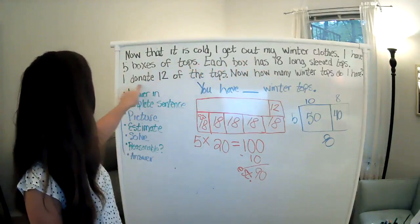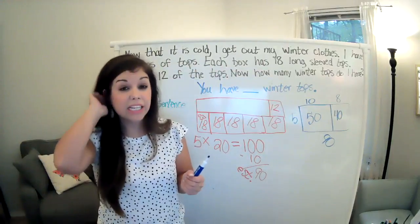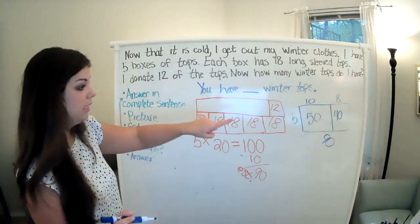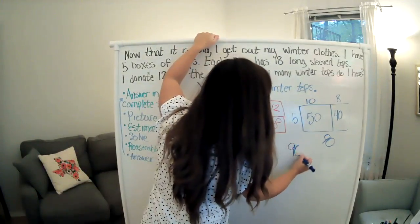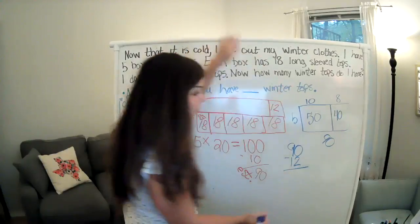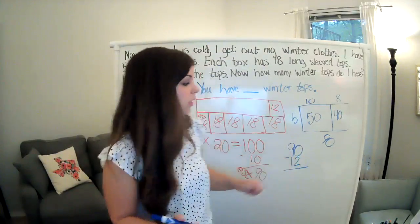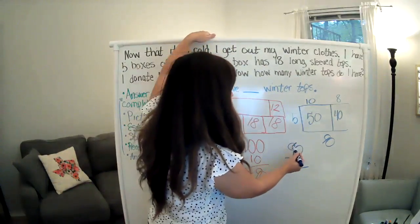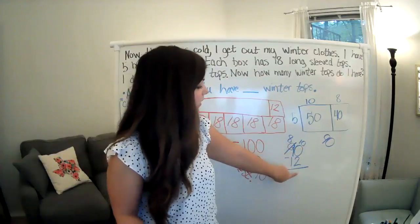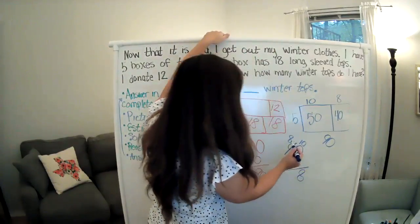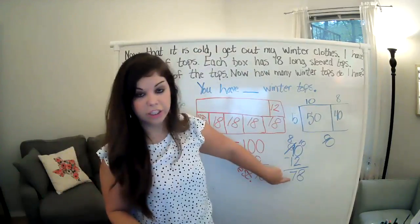But I'm still not done. Look back at my picture. I figured out that this total is 90. But it says that I donated 12 of the tops, which means that I gave away 12 of them, which means I need to subtract. So now I need to take 90, take away 12. So I'm going to write 90 minus 12. So, ooh, look at that. Can I take two away from nothing? Nope. So I need to regroup. When I regroup, I go to the nine tens and I make it eight tens, and I give a 10 to the ones place. Now I have 10, take away 2, which gives me 8, and 8 take away 1, which gives me 7. So now I have an answer of 78.